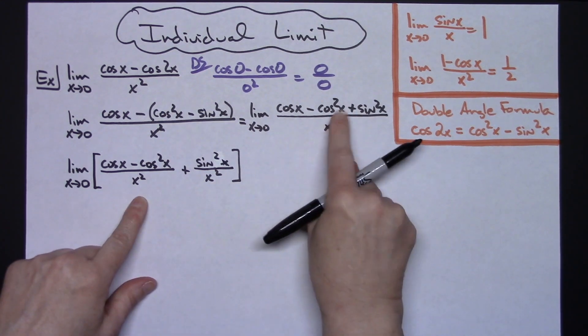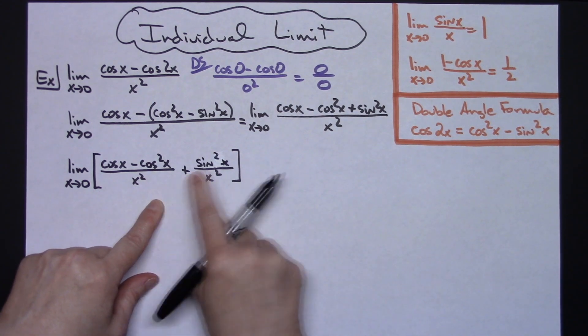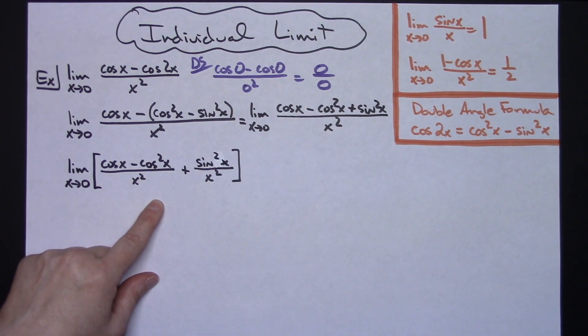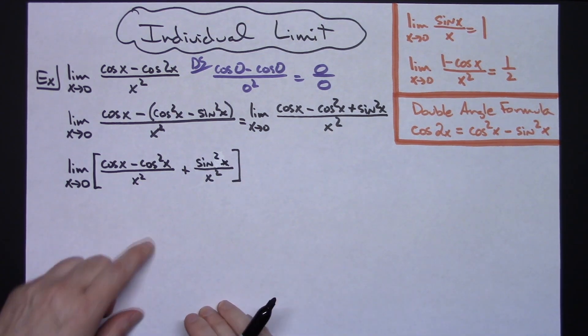So sine squared x, there we go, that looks a little bit better. Now whenever you take a single fraction and break it up into two separate fractions, you always ought to check your work. Can I add these two fractions and get this original expression back? And I can because when you add like denominators, you need that common denominator.